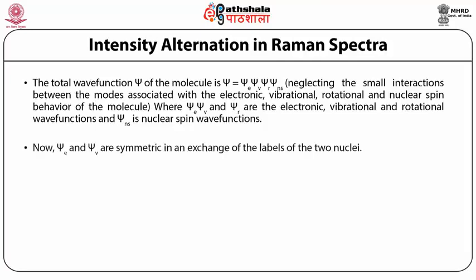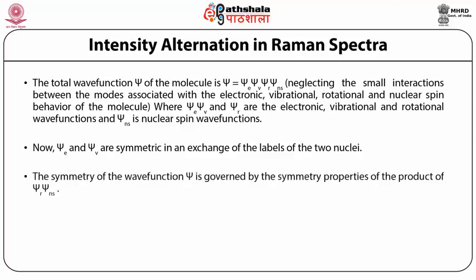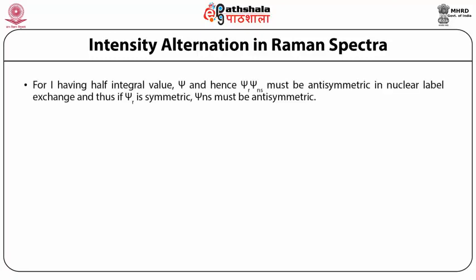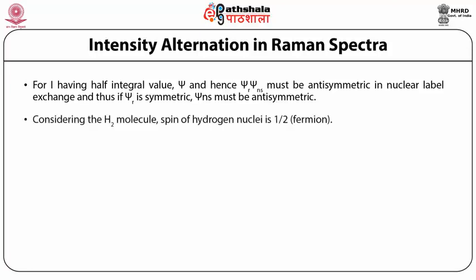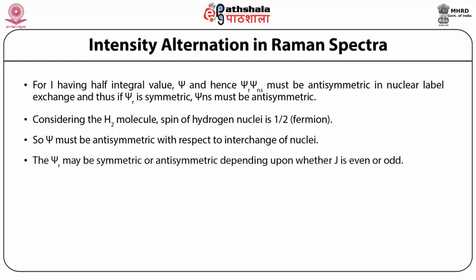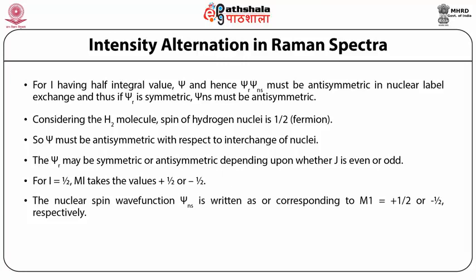Now, ψ_e and ψ_ν are symmetric in an exchange of the two nuclei. The symmetry of the wave function ψ is governed by the symmetry properties of the product ψ_r · ψ_ns. For i having half-integral value, ψ_r · ψ_ns must be anti-symmetric in nuclear exchange; thus if ψ_r is symmetric, ψ_ns must be anti-symmetric. Considering the hydrogen molecule, the nuclear spin is 1/2 — corresponding to a fermion — so ψ must be anti-symmetric with respect to interchange of nuclei. ψ_r may be symmetric or anti-symmetric depending on whether J is even or odd. For i = 1/2, m_l takes the values +1/2 or −1/2.